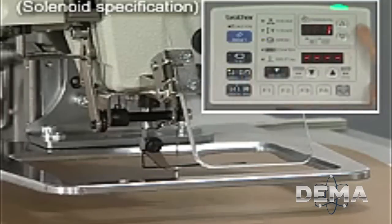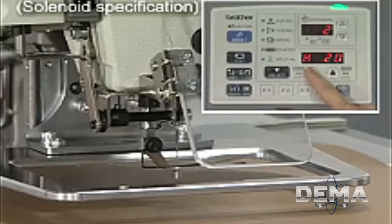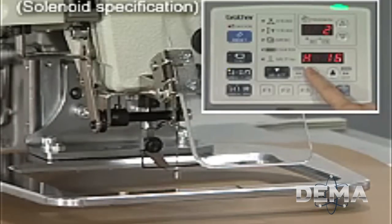With the BAS311G and 326G, the work clamp lift amount can be set at the operation panel without using any tools.